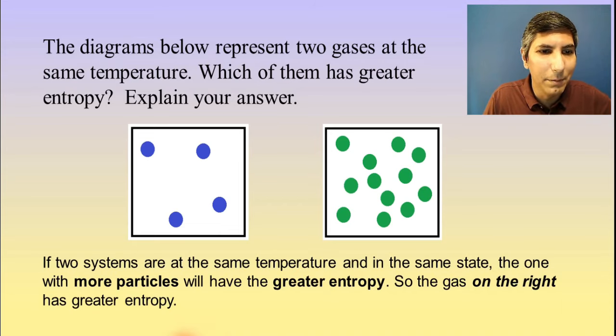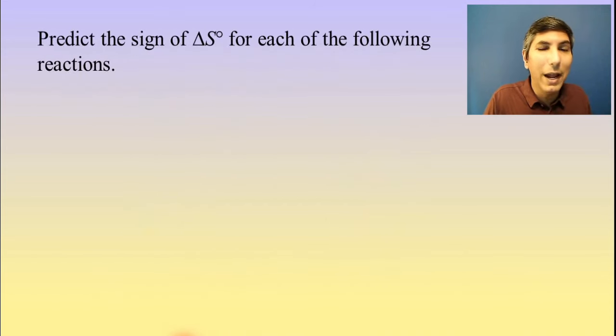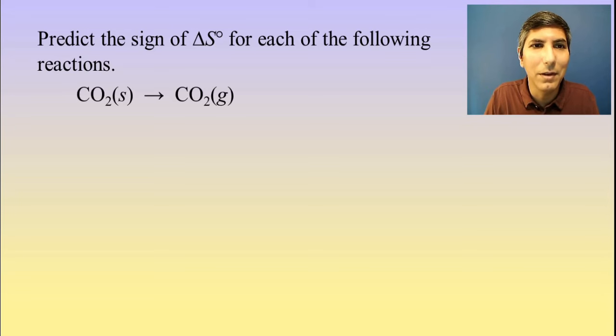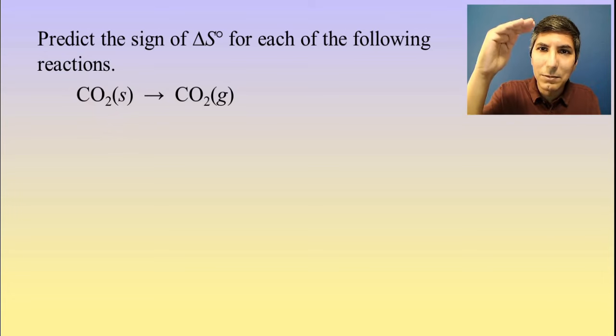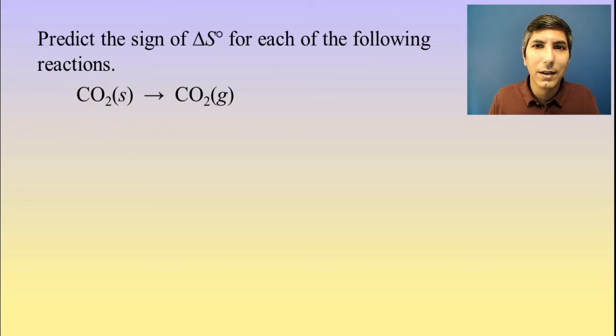Let's try a few examples here where we're asked to predict the sign of delta S or the change in entropy for each of the following reactions. So let's see how this is done. Well, in this case, you can see that we're going from carbon dioxide solid, which has a low entropy, to carbon dioxide gas, which has a higher entropy. So solid to gas, well, that's an increase in entropy, isn't it? So we're going to call that a positive delta S sign.